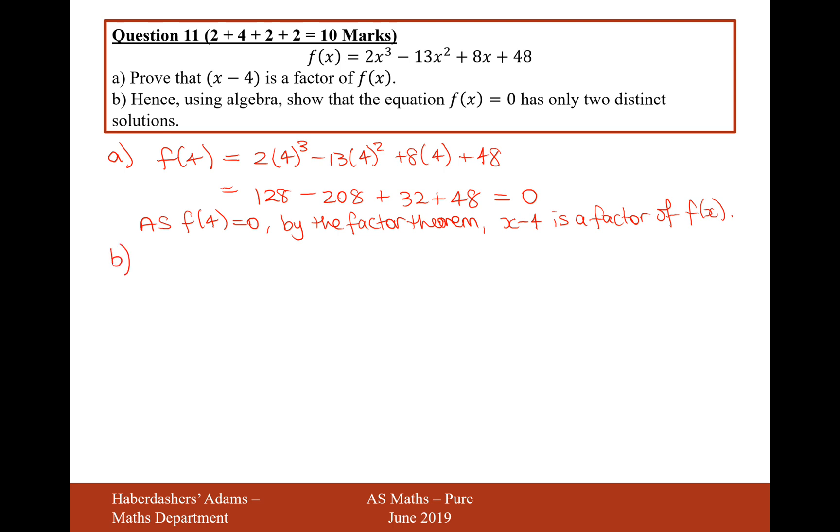Moving on to part B now. Hence, using algebra, show that the equation f of x equals 0 has only two distinct solutions. What distinct means is different solutions. So, it may have one that's repeated. What I'll do then is I'll write 2x cubed minus 13x squared plus 8x plus 48. And now I'm going to try and factorise it with x minus 4.